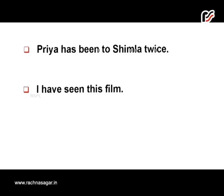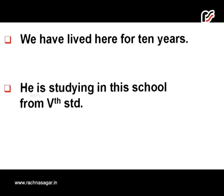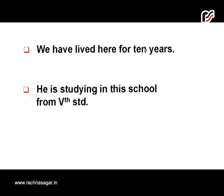To describe a past event: 'Priya has been to Shimla twice' and 'I have seen this film.' Present perfect tense describes a past event having some connection with the present. To express an action that took place in the past and is still in progress: 'We have lived here for 10 years' and 'He is studying in this school from 5th standard.' Studying since 5th standard is past, and still studying is present.